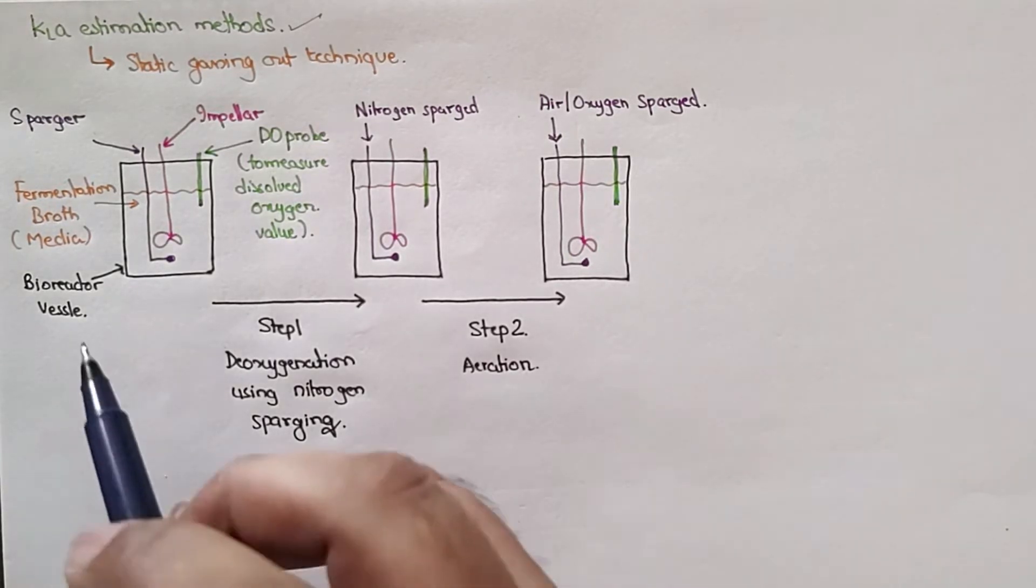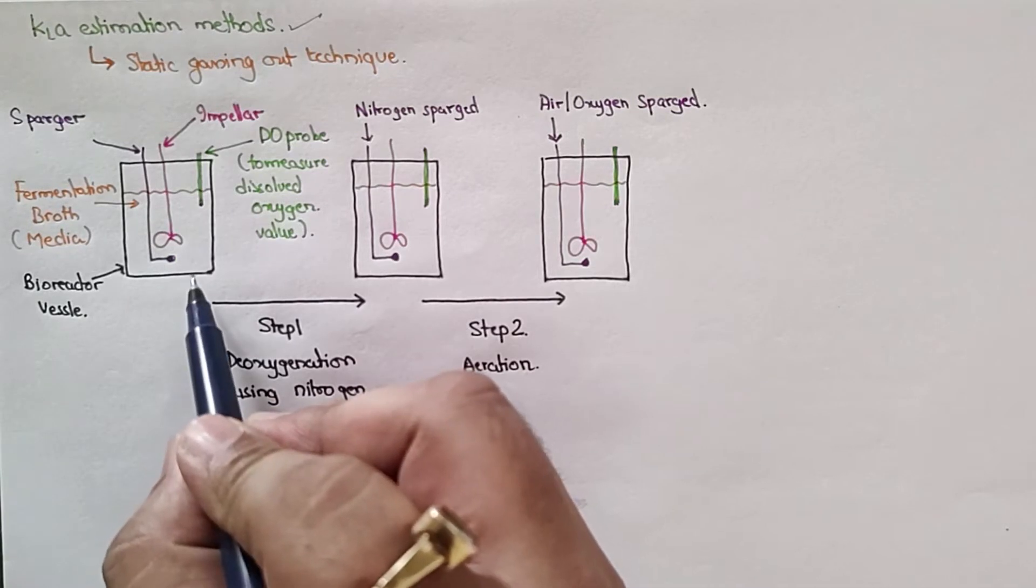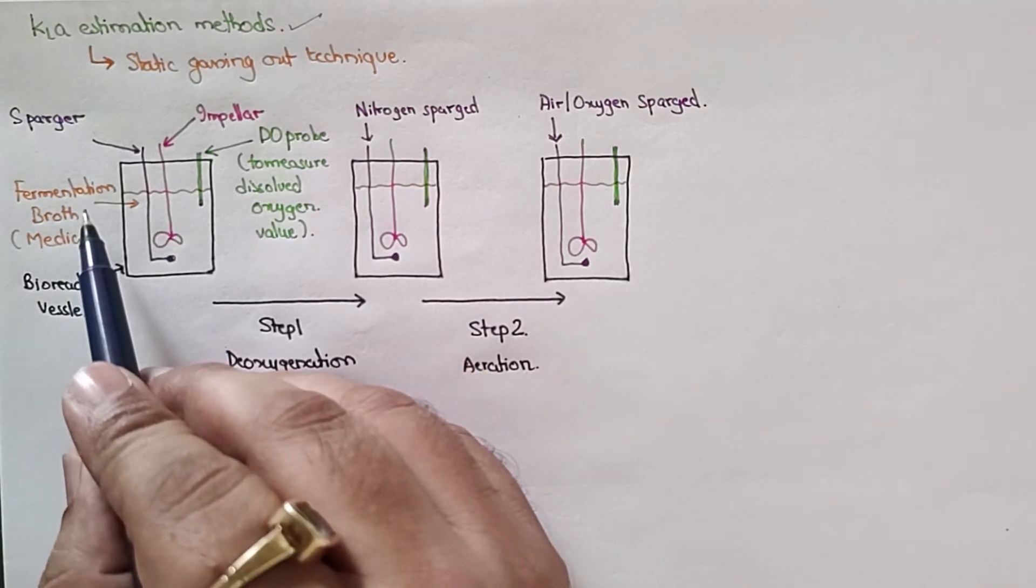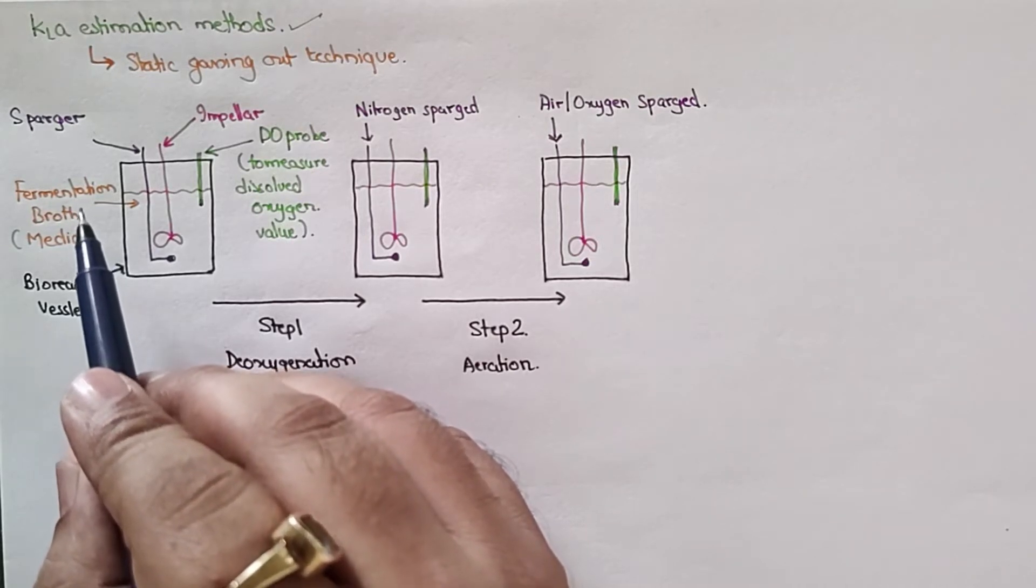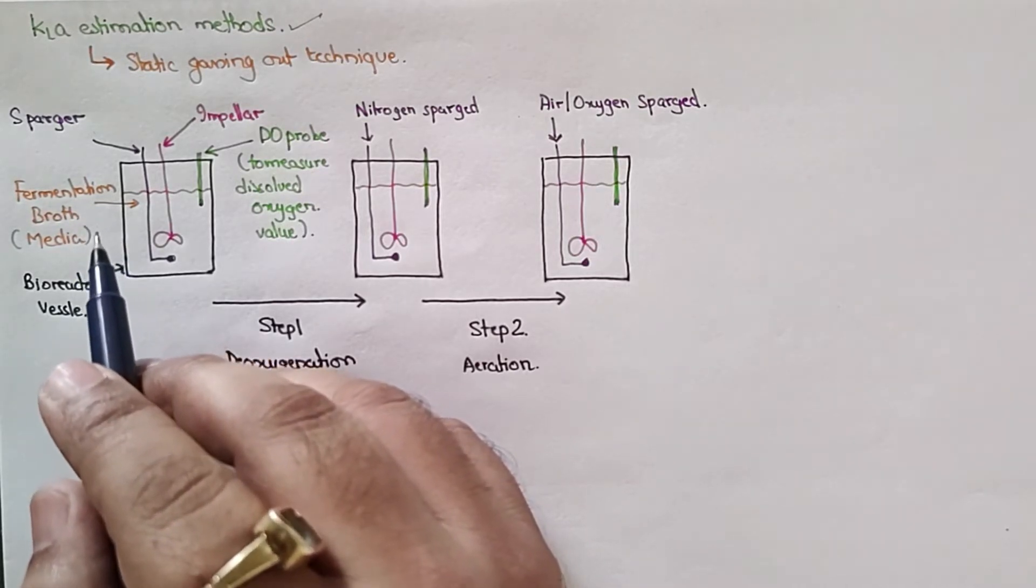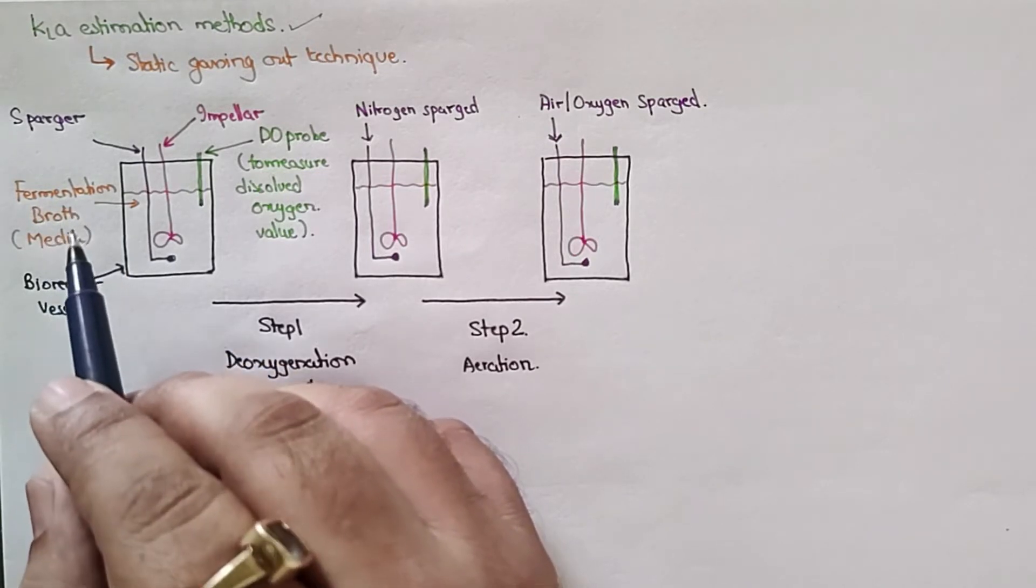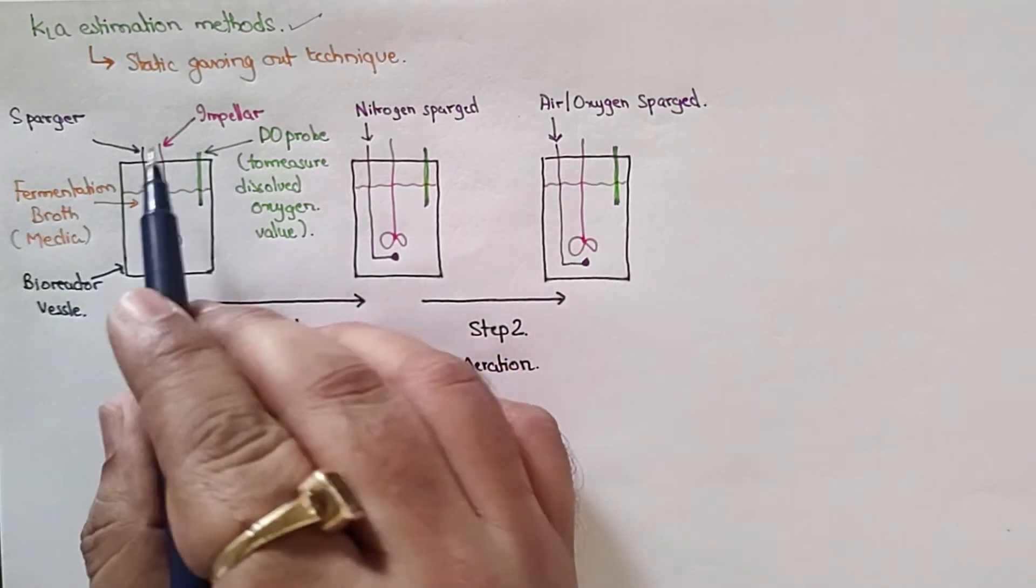You have a bioreactor vessel. In this, you have filled your fermentation broth—it will contain fermentation broth, not water or sodium sulfite. It will have an impeller.